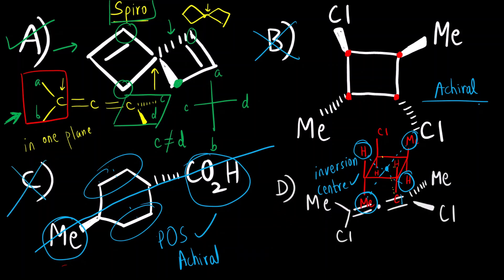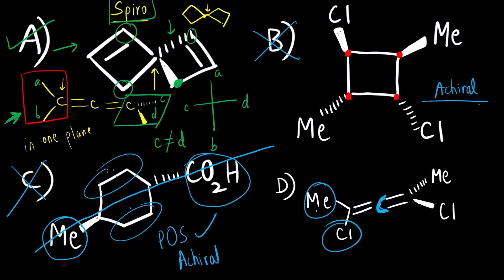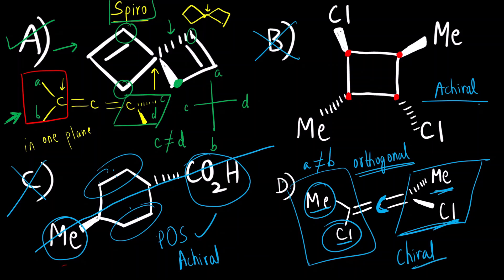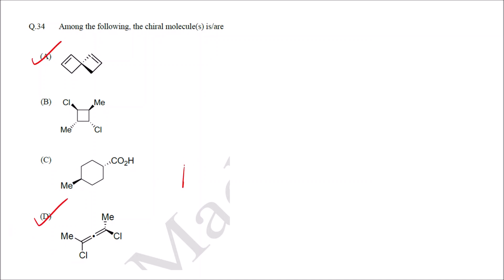The last one is the allene system, which we discussed just now. The dot notation means there is one central carbon. The methyl and chlorine on one end are in one plane, and the methyl and chlorine on the other end are in the perpendicular plane — they are in orthogonal planes. The condition is A should not equal B: methyl and chlorine are different. On the other side also, methyl and chlorine are different. So this molecule is chiral.